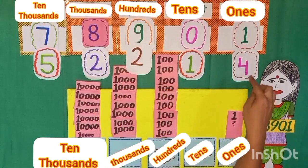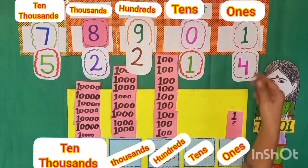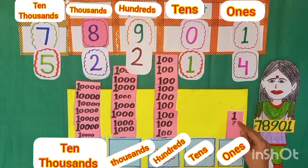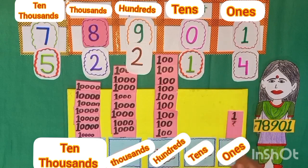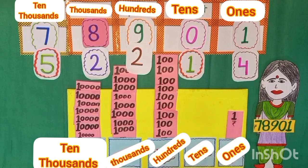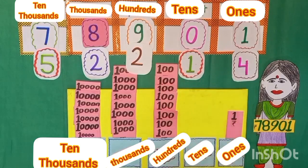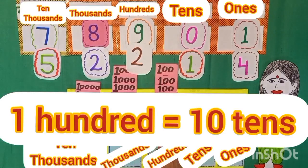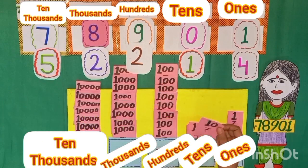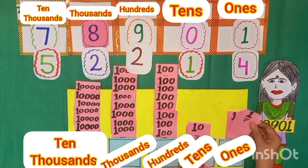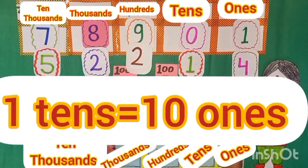She has 1 note of 1 but she has to give 4 notes of 1. So she will replace 10 notes of 1s with a single note of 10, but here we have no currency on tens. So we will move to hundreds. We will replace 1 note of 100 with 10 notes of 10, because 100 is equal to 10 tens. Now we will replace 1 note of 10 with 10 notes of 1, because 1 ten is equal to 10 ones.